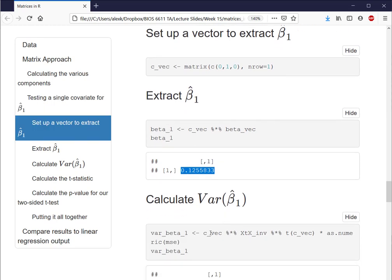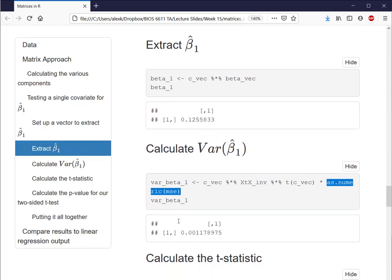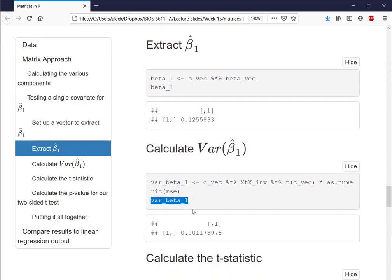The variance of beta 1 then will be the contrast, or that CVEC we described before, times the X transpose X inverse term times the transpose of our CVEC times the MSE. With this information, then, we see that we have an estimate for the variance of beta 1 of 0.001178975, where if we wanted the standard error, which we traditionally see in our coefficient table, we can take the square root of that value.